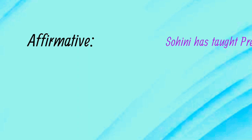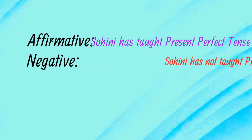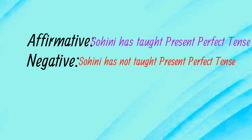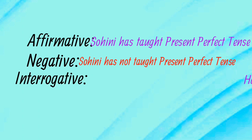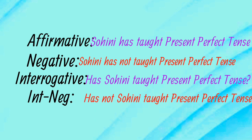Next example: Affirmative — 'Shohini has taught present perfect tense.' Negative — 'Shohini has not taught present perfect tense.' Interrogative — 'Has Shohini taught present perfect tense?' Interrogative negative — 'Has Shohini not taught present perfect tense?'